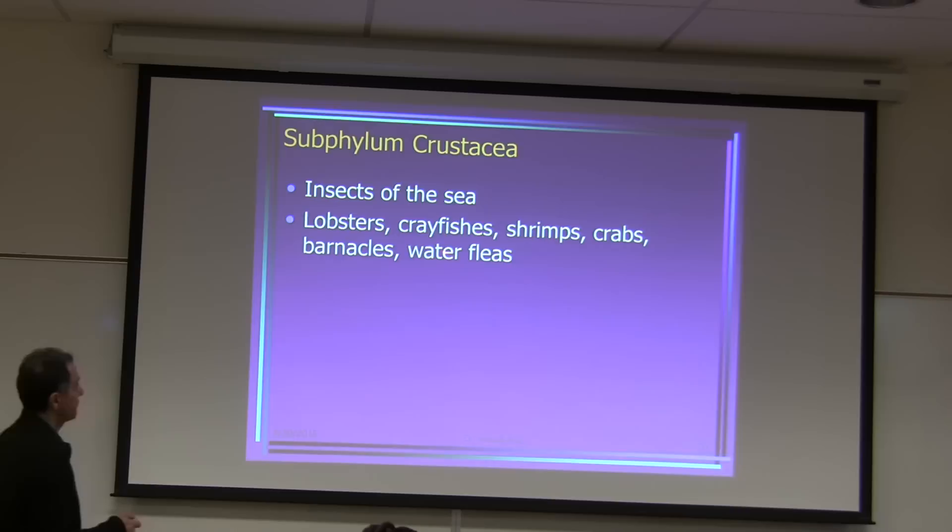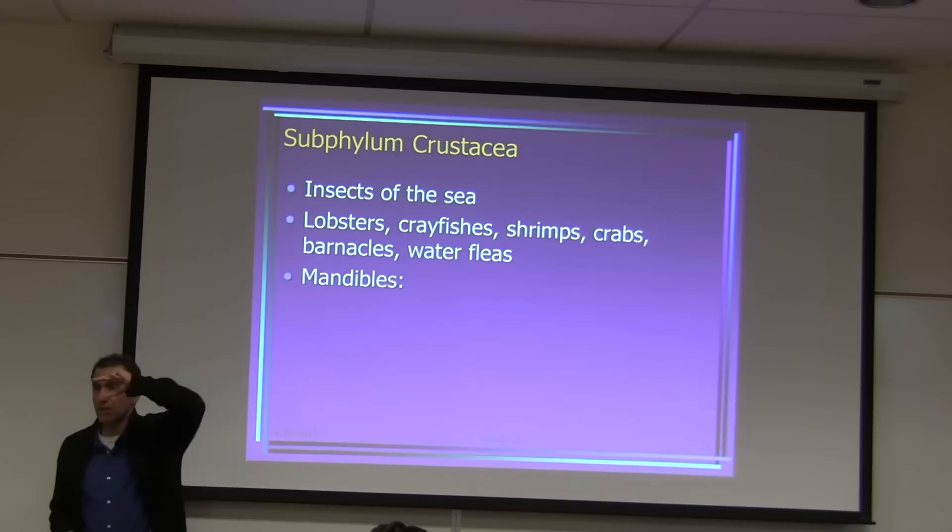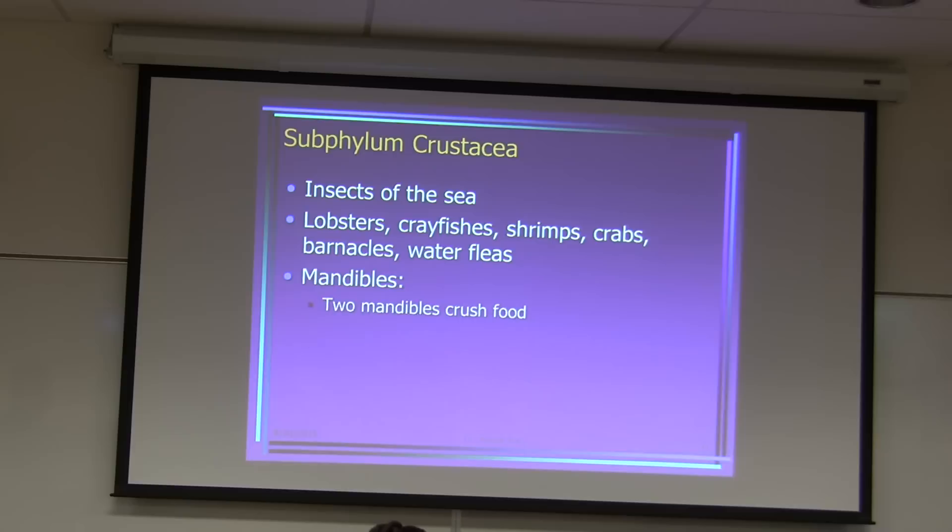They have mandibles — the mouth part I was talking about. Insects have them, and crustaceans have them too — that's why they call them insects of the sea, because of their mandible. Two mandibles crush food, two maxillae shred food, and they have two pairs of antennae and maxillae.